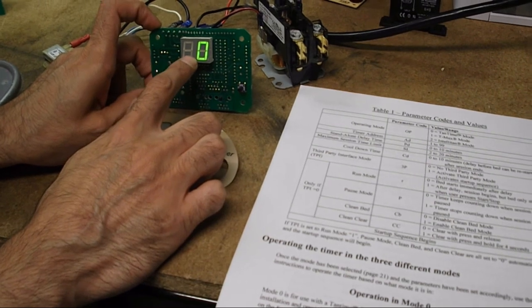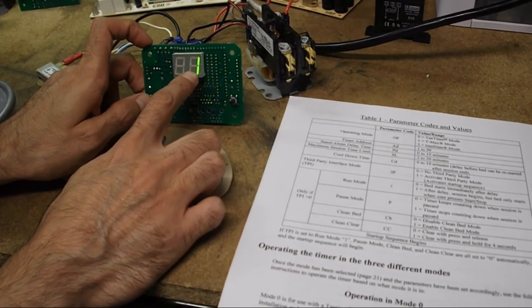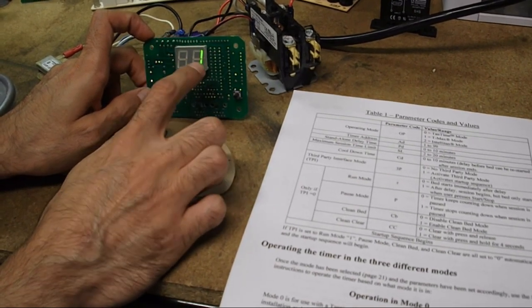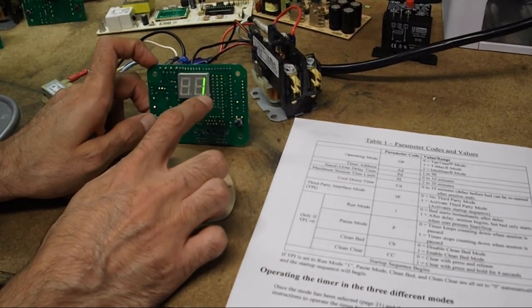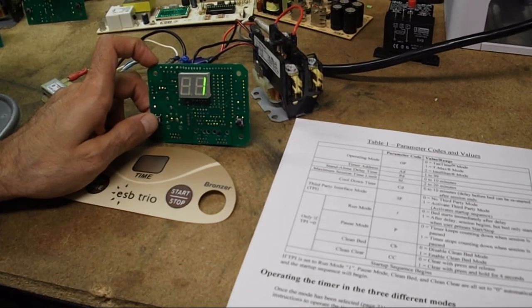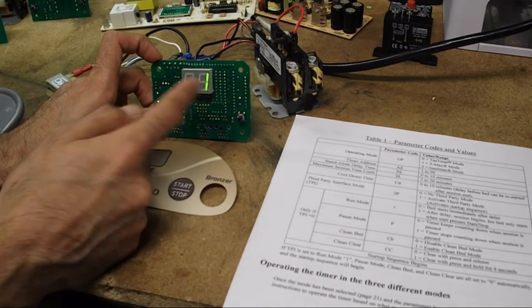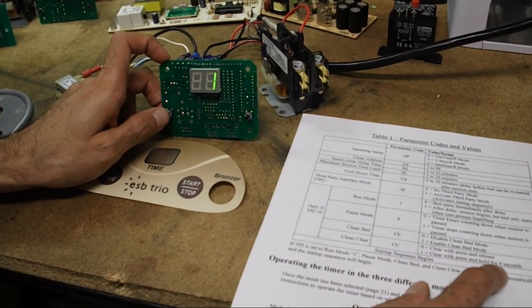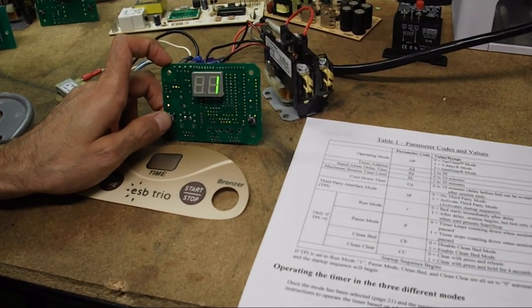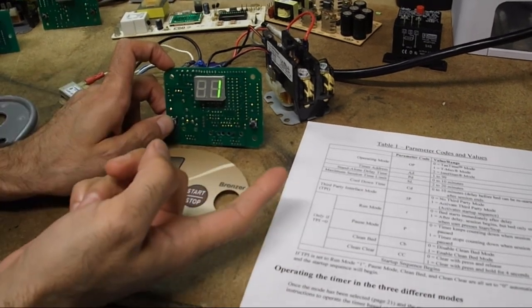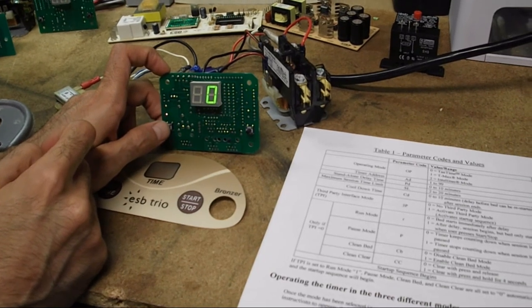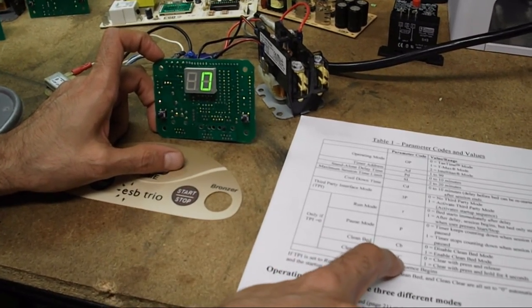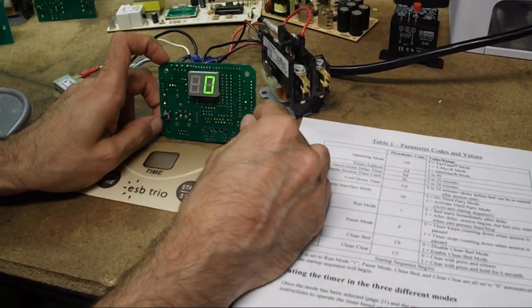I'm going to leave it at one and hit start stop to go to the next parameter and it goes to CB, which stands for clean bed. If this is enabled, it would be set to one. Disabled is zero. One, when it's enabled, means that when the timer is done with the session, then the bed has to be cleaned before being able to start again. This triggers the clean clear mode, which would be right after this parameter. And zero means that you clear it with a press and release and one means that you clear with press and hold it for four seconds. That would mean that the person that goes in and cleans the tanning bed after the use would have to clear it out until the timer can be started again. I'm going to leave this at zero. And then when I hit start stop to go to the next parameter, it's not going to do the clean clear mode because there is no clean bed mode. So it's going to go right back to the initial startup sequence.